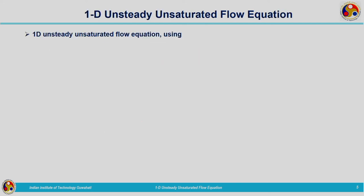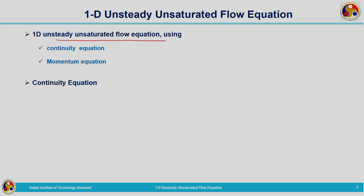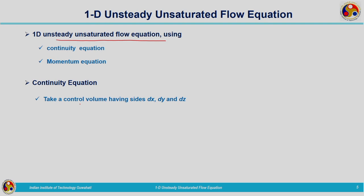Now let us move on to the derivation of the equation corresponding to flow through an unsaturated porous media. Here we are going to develop the one-dimensional unsteady unsaturated flow equation. Basic laws related to mass conservation and momentum conservation are utilized. We will start with the continuity equation, and for that we are going to consider the control volume — that means we will make use of Reynolds Transport Theorem — considering a control volume having sides dx, dy, and dz.